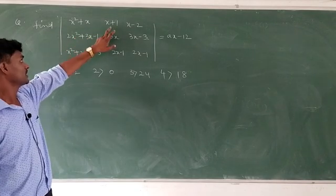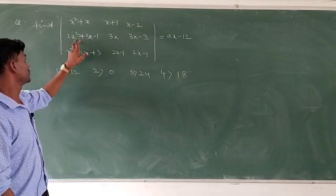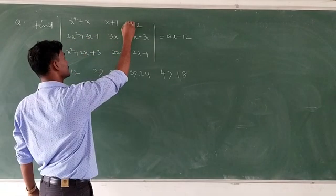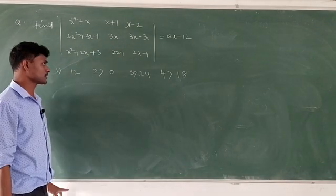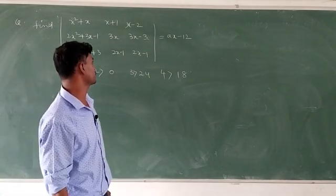Find x squared plus x, x plus 1, x minus 2. And 2x squared plus 3x minus 1, 3x, 3x minus 2. X squared plus 3x plus 3, 3x minus 1, 3x minus 1.